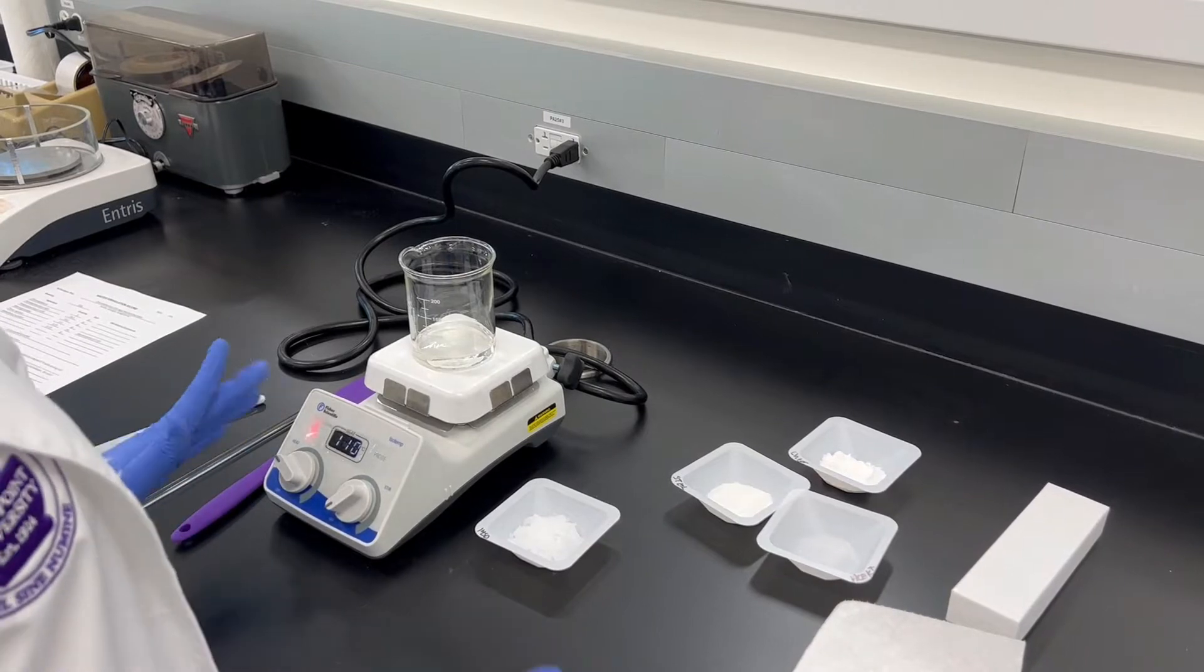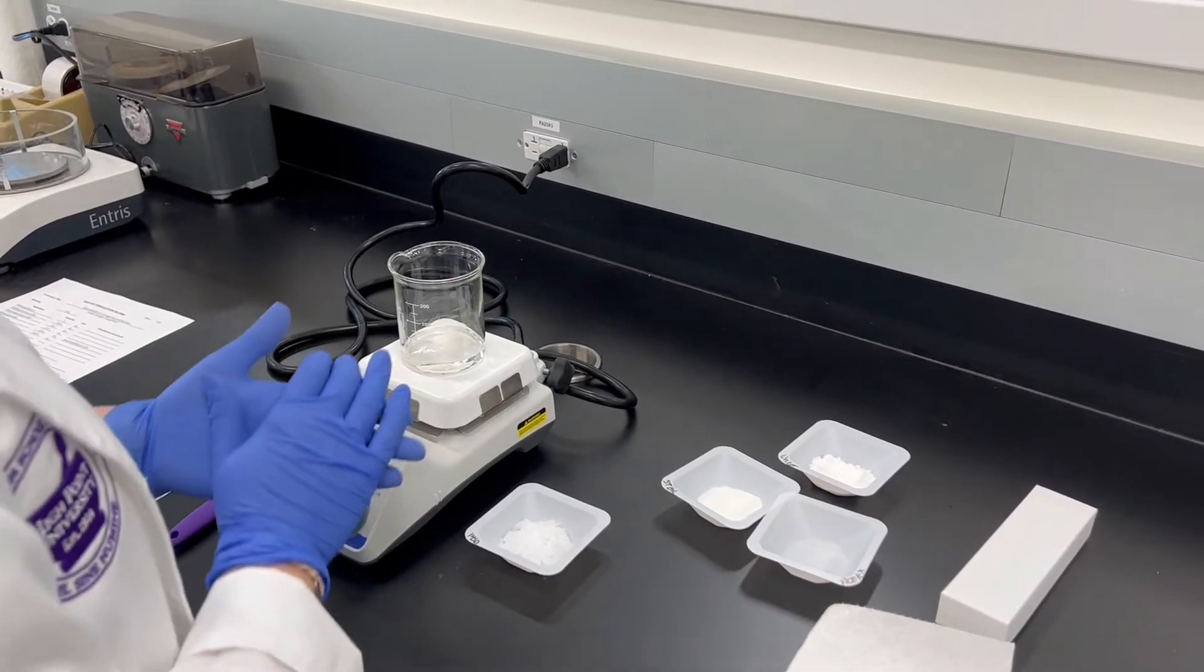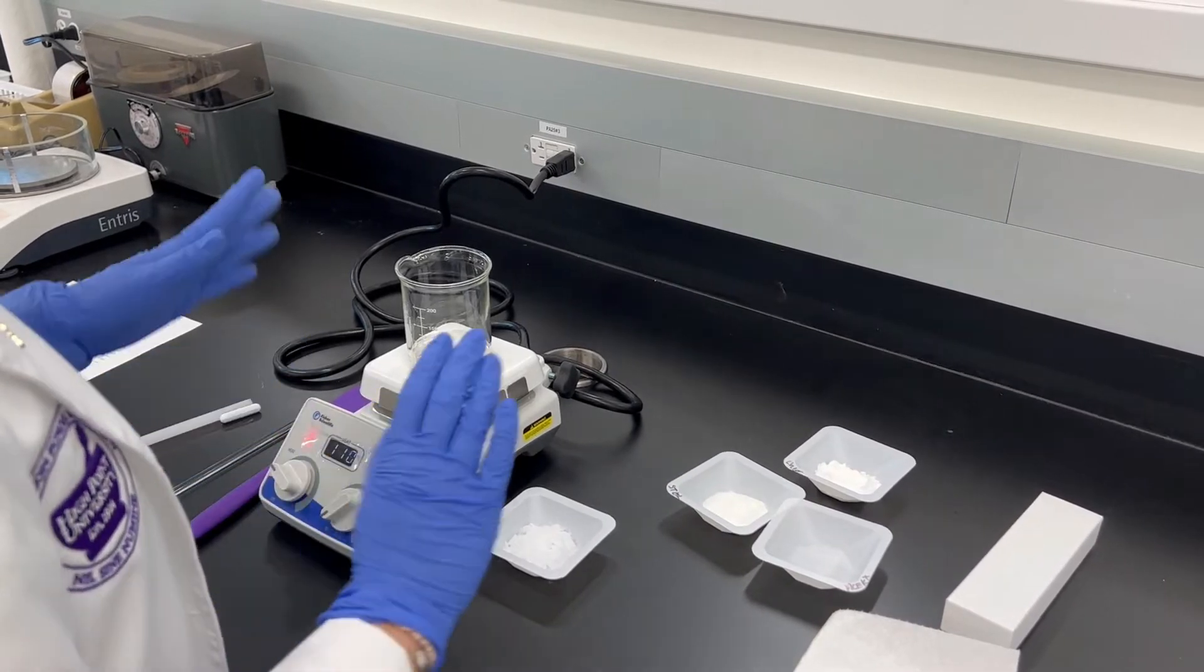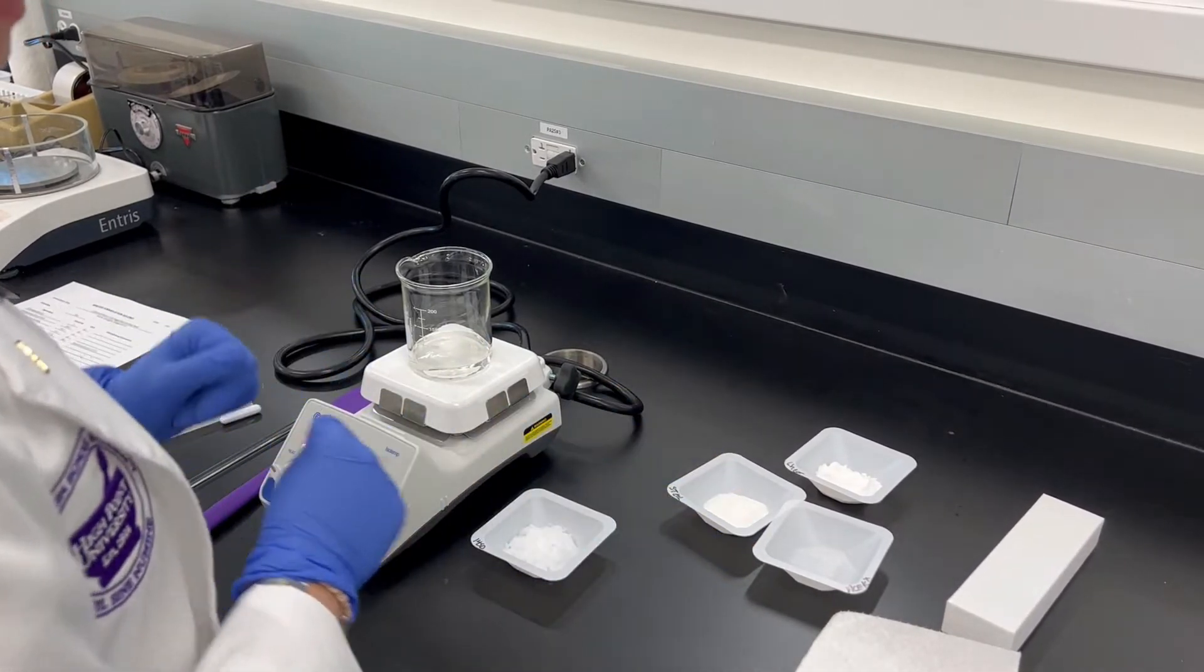All right, so today we are going to be making chloramphenicol 100 milligrams per gram flavored oral paste. We went ahead and weighed out all of our ingredients and included 10% excess.